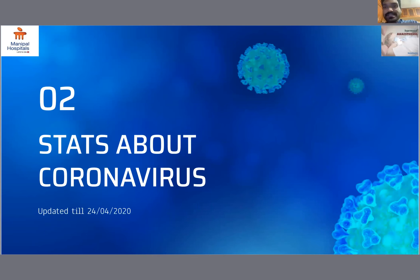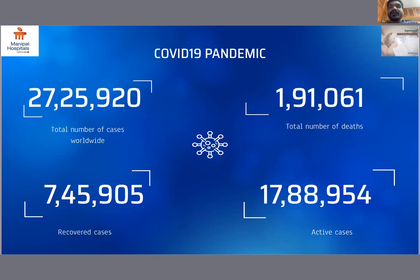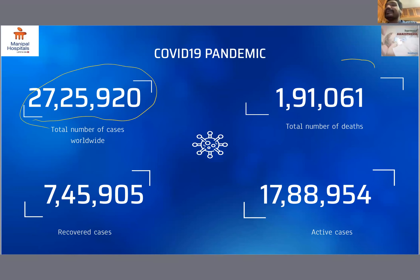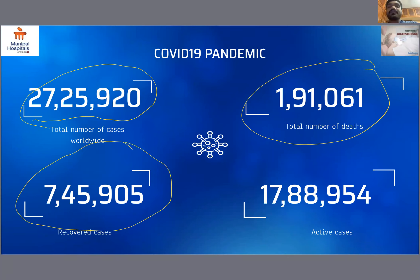Coming to the current stats about the coronavirus: the total number of confirmed cases worldwide is 27,25,920, with a total number of deaths of 1,91,061, recovered cases of 7,45,905, and current active cases of 17,88,954.